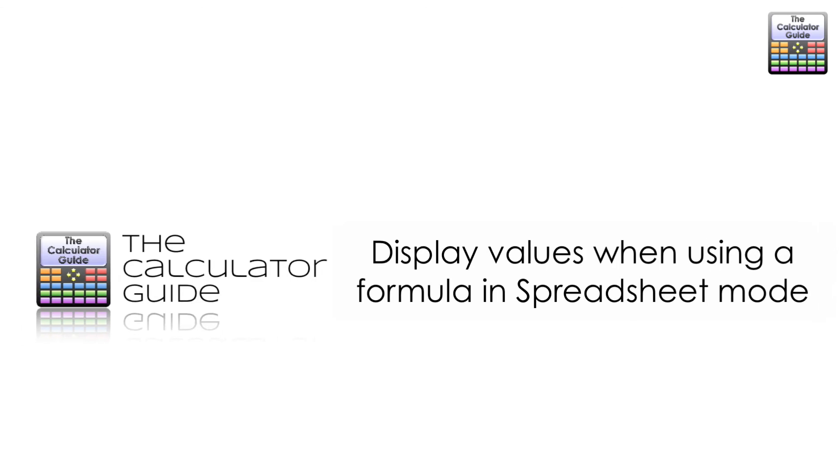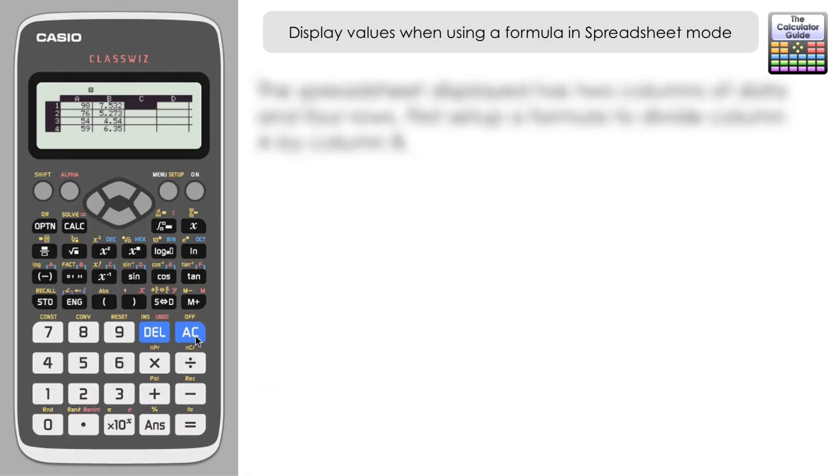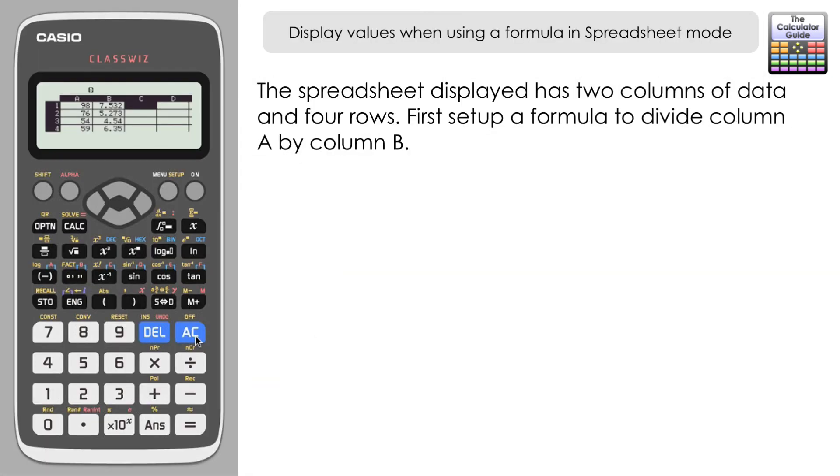Hello and welcome to the calculator guide video on displaying values when using a formula in spreadsheet mode. I'm currently in spreadsheet mode and I have two columns of data here filled in column A with four cells of data and column B with four cells of data.